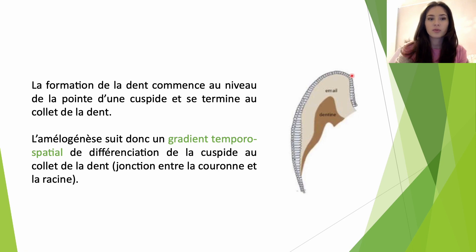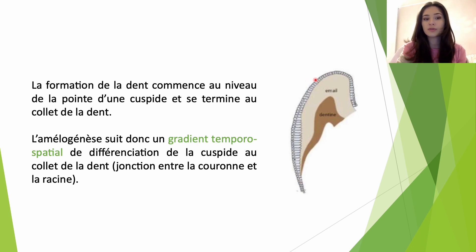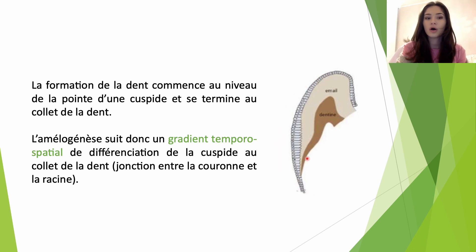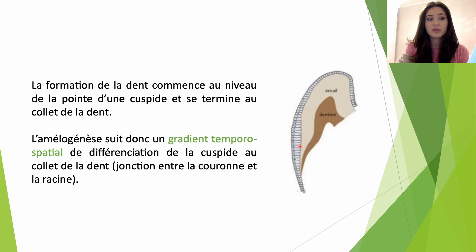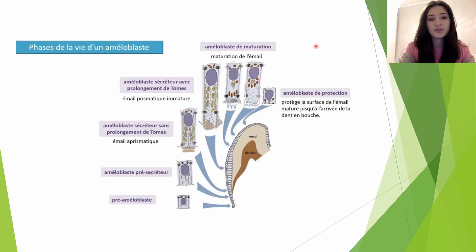La formation de la dent va commencer au niveau de la pointe d'une cuspide et va se terminer au niveau du collet de la dent. L'amélogénèse suit donc un gradient temporo-spatial de différenciation de la cuspide jusqu'au collet de la dent, au niveau de la jonction entre la couronne et la racine. Sur ce schéma, on voit que l'amélogénèse est terminée en regard de la pointe de la cuspide, tandis qu'elle n'a pas encore commencé au niveau du collet de la dent.